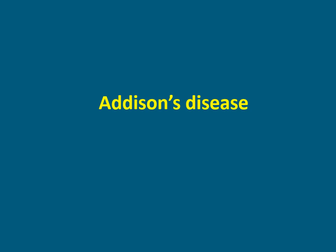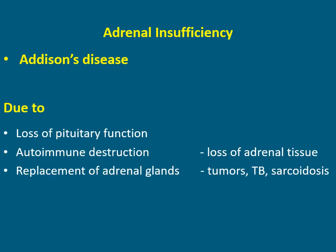Addison's disease — what is adrenal insufficiency? In Addison's disease, cortisol levels are decreased, which is why we call it adrenal insufficiency. Addison's disease is due to loss of pituitary function, autoimmune destruction, replacement of adrenal glands, loss of adrenal tissue due to tumors, tuberculosis, and sarcoidosis.